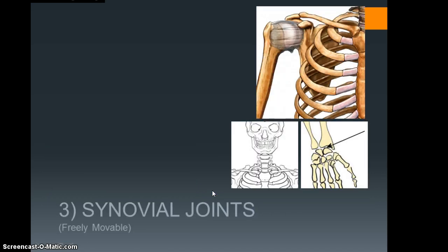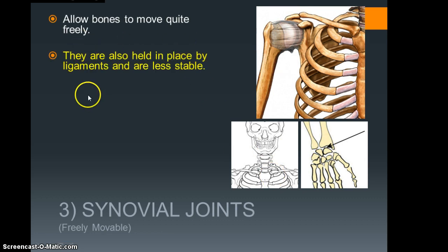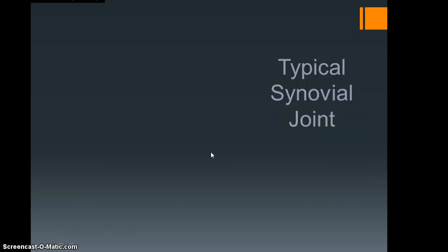Lastly is the synovial joint, and this is one that you might have heard of before. This is your freely movable joint. Examples here we have are the shoulder or you could have the wrist. This allows quite a significant amount of movement compared to the others, but it is held in place by ligaments. The significant difference though is the synovial fluid that lubricates the joint capsule and the cartilage within that joint. Examples would be knee, wrist, elbow.